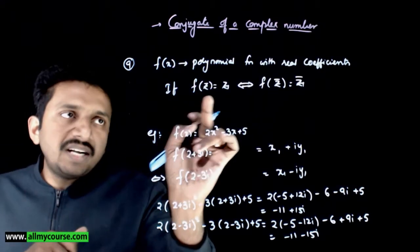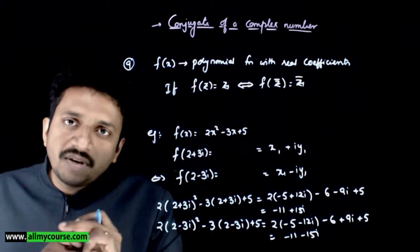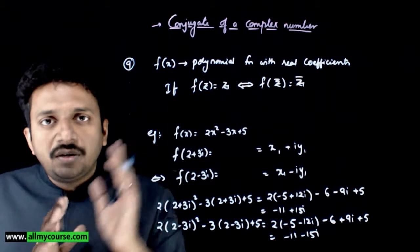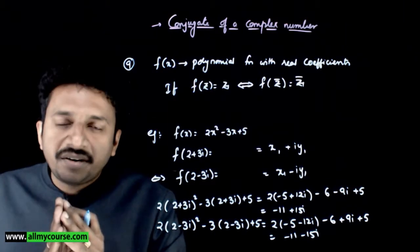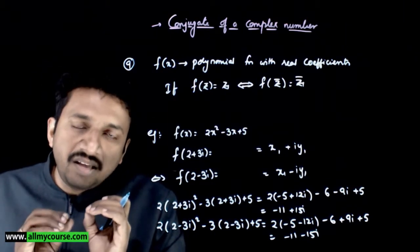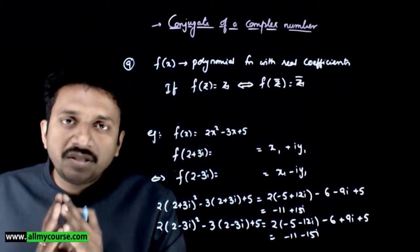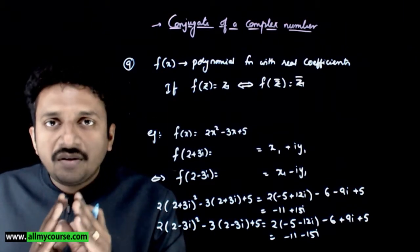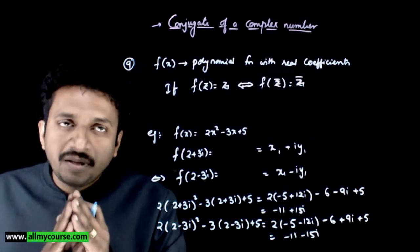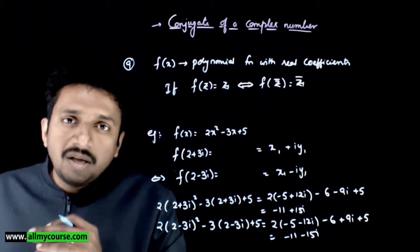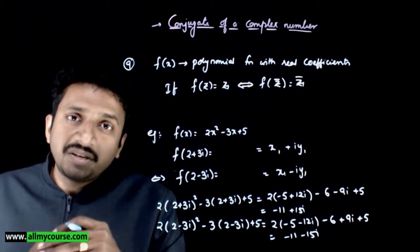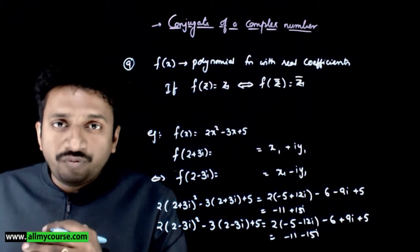So if f(z) equals z₁, then f(z bar) equals z₁ bar. These are the important properties of conjugates which you need to remember. Once you understand all these properties, you can move forward.